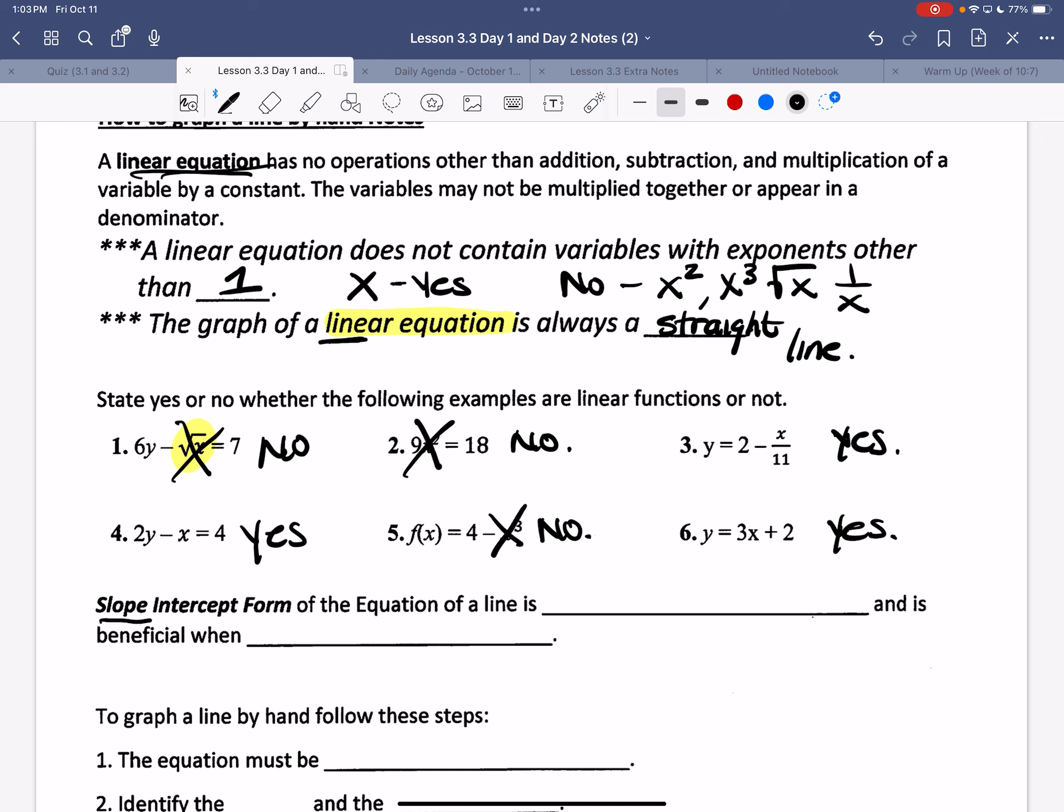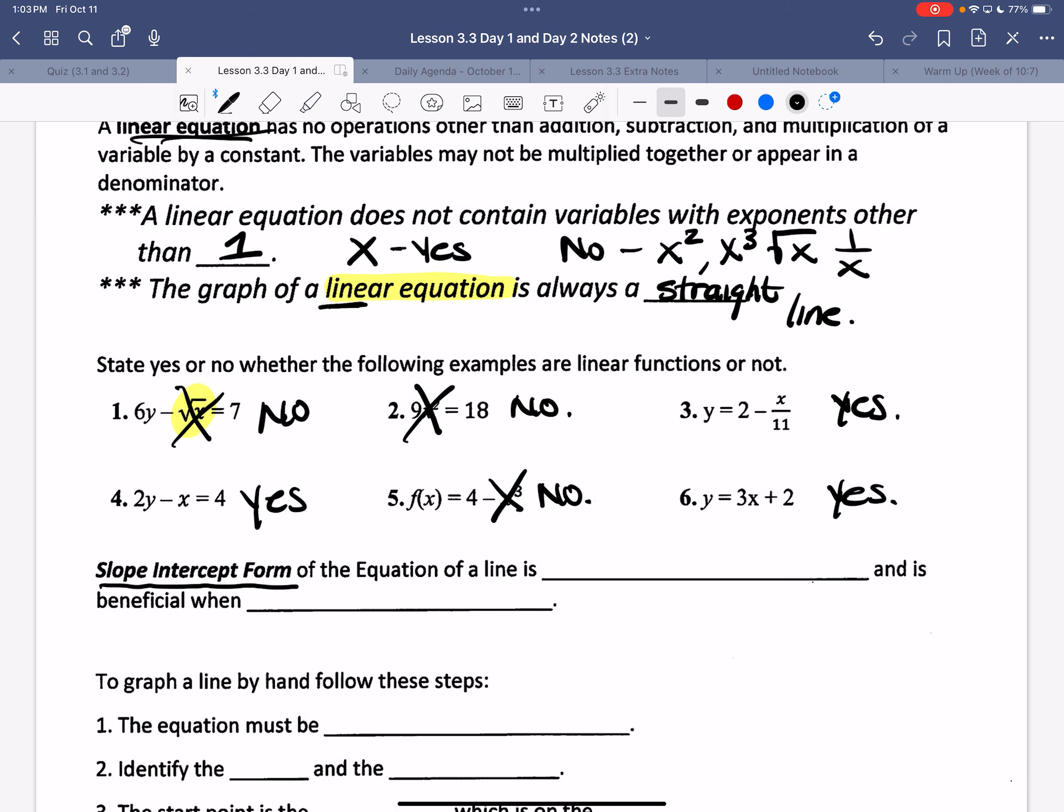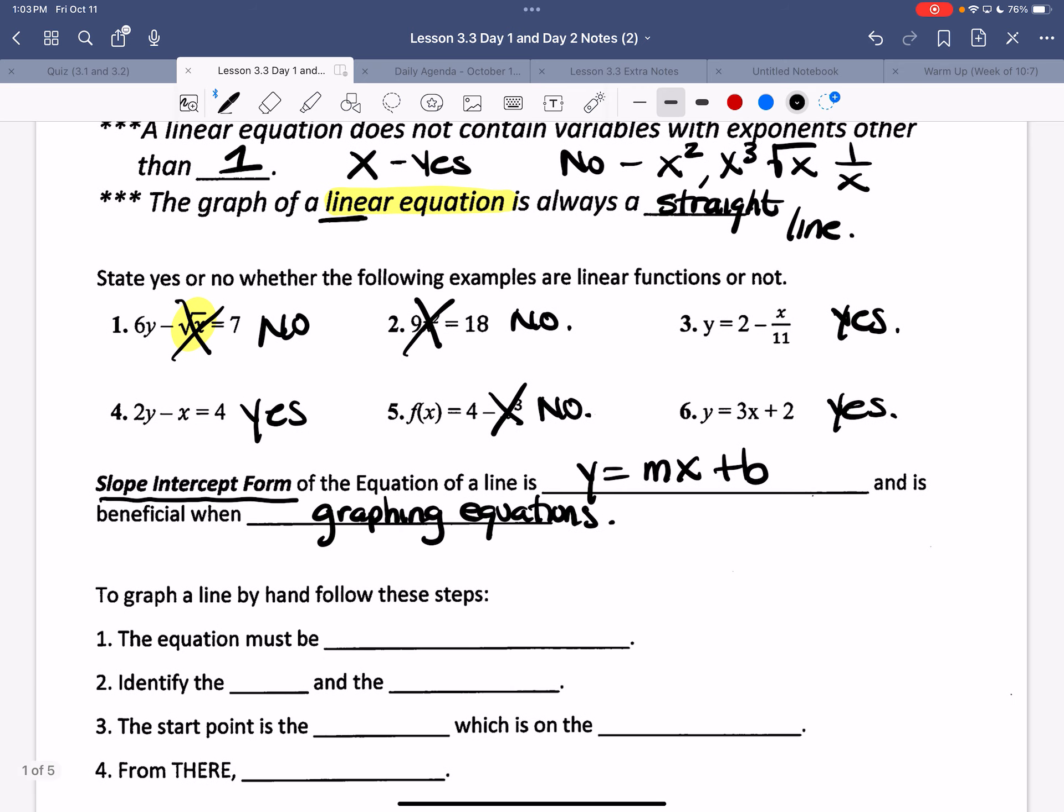So the key for today is the slope-intercept form. Who remembers what the slope-intercept form is? Cuba? That's the slope formula. What's slope-intercept form? Right, so y equals mx plus b. Hopefully that's something you remember from some previous years. And it's going to be beneficial when we are graphing equations. So y equals mx plus b. But let's remind ourselves, what does the b stand for in y equals mx plus b? Base. I heard two things. What did you say? Base. Base, and what did you say? Right, so y-intercept. Right, you're thinking of area or the big B. So this will be y-intercept.